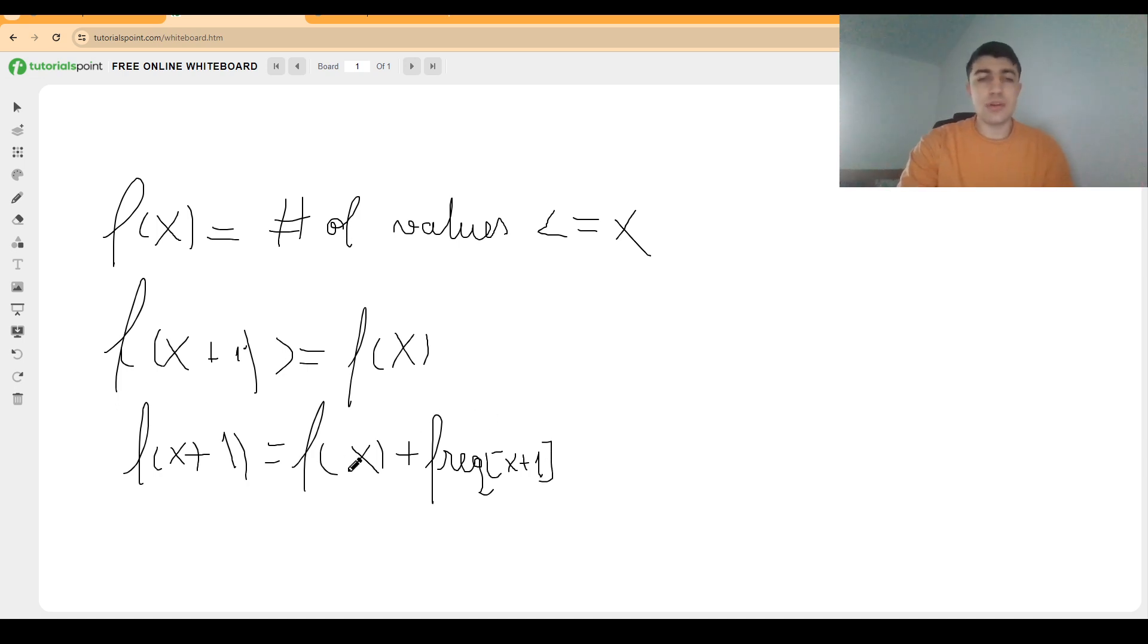Now the most important consequence of this property is the fact that given that this function is now increasing, we can now use binary search to find the smallest value of x such that f(x) is greater or equal to n squared over 2 plus 1.